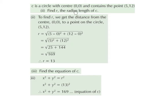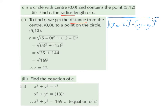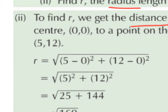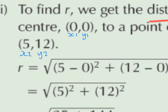For Part 2, find R, the radius length of C. To find R, we get the distance from the centre (0, 0) to a point on the circle (5, 12). We use the distance formula: √[(x₂ − x₁)² + (y₂ − y₁)²]. We label our points x₁, y₁ = (0, 0) and x₂, y₂ = (5, 12), then substitute into the formula.